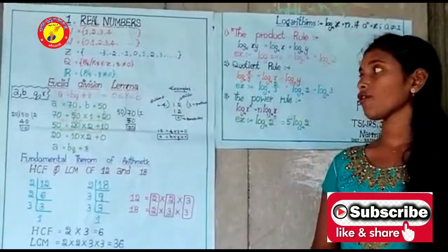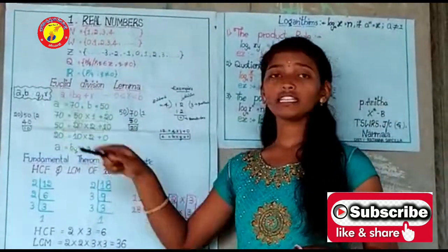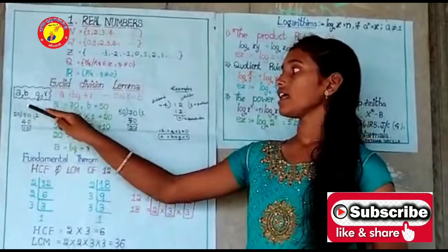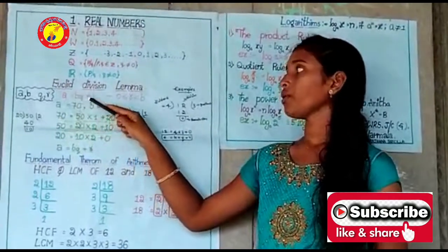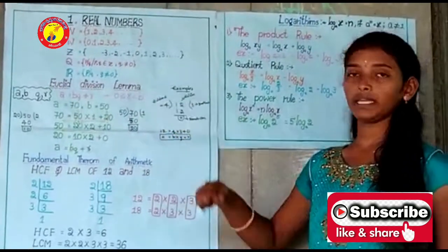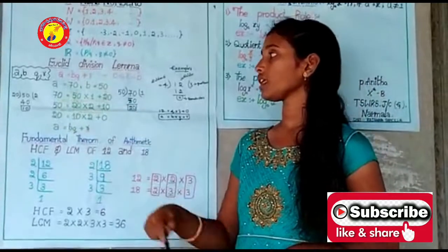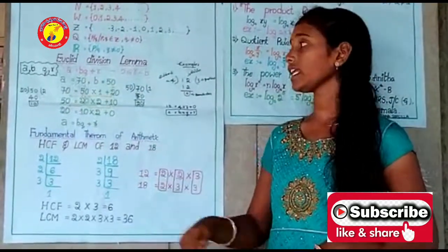Let's discuss the first topic, Euclidean division lemma. Here, a and b are positive integers. There exist q and r such that a = bq + r, where 0 ≤ r < b. Here, a is the dividend, b is the divisor, q is the quotient, and r is the remainder.